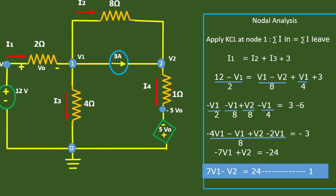Here we have the incoming current I1 to this node, while I2, I3, and the 3 amperes are leaving. So we can write this as I1 is equal to I2 plus I3 plus 3.